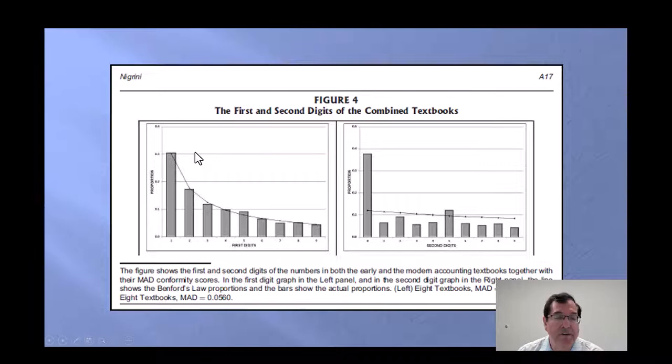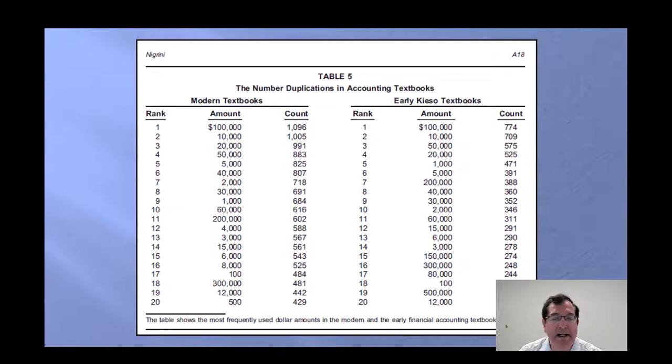If I only looked at the first digits, I would say the data conforms to Benford's law. However, when I look at the second digits, I can see a huge excess of second digit zeros, and I can see an excess of second digit fives, something that is hidden if I only look at the first digits. When I do the number duplication test, I can see that the numbers that are favored in the accounting textbooks are round numbers. We can see 1, 0, 2, 0, 5, 0, all as first digits.